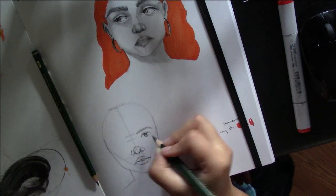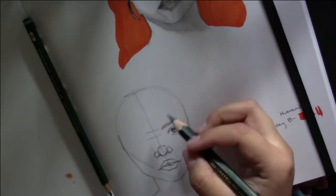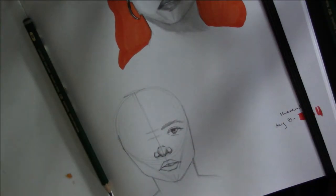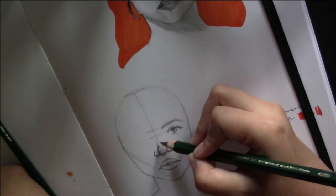With Copic markers, you can layer them to make some places lighter and some places darker. But after ditching putting color on their face and just doing the hair, it became a lot easier for me.